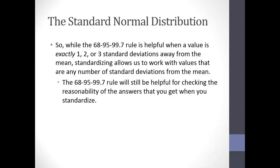The 68-95-99.7 rule is helpful for the rare case where you need to know something about numbers that are exactly one, two, or three standard deviations away from the mean, but that's not usually going to be the case. So we're going to use standardizing to answer a more general type of question.